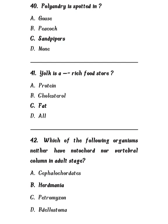Question 42: Which of the following organisms neither has notochord nor vertebral column in the adult stage? Options: cephalochordates, Herdmania, petromyzon, or delostoma. The correct answer is Herdmania. Herdmania is the only organism which has neither notochord nor vertebral column in the adult stage.